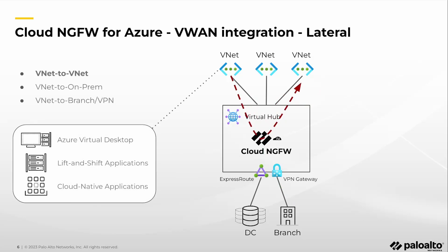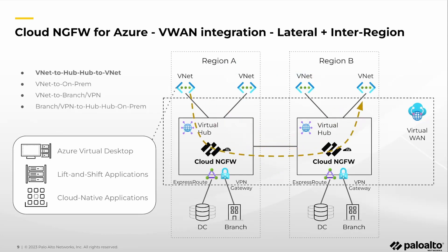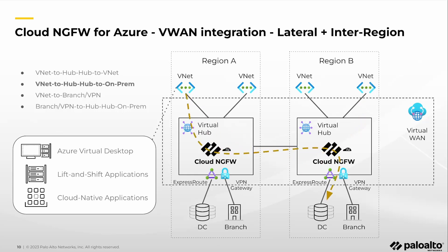Inspecting east-west traffic that traverses the VWan hub provides greater visibility and allows for policy enforcement while enabling you to monitor and detect any anomalies, suspicious activities, or potential security breaches. This is especially critical for inter-region traffic with multiple hubs connected via Azure Backbone.